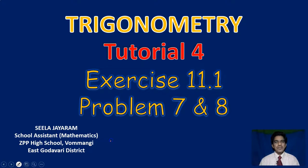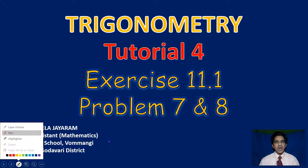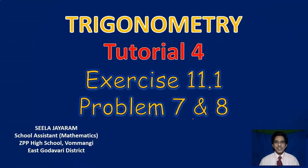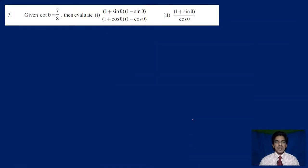Hi students, welcome to the fourth tutorial of the chapter Trigonometry. This is problem number 7. Given cot theta is equal to 7 by 8, then evaluate: first, (1 plus sin theta)(1 minus sin theta) divided by (1 plus cos theta)(1 minus cos theta). And the second problem is, find the value of (1 plus sin theta) divided by cos theta.